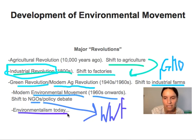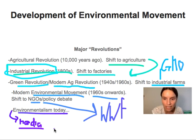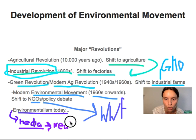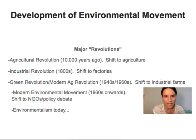Then you can look at environmentalism today. If I had to give this a revolution name, I would really call it the media revolution. Now that we are consuming our media from sources like Netflix and Facebook, the information that we receive is really specialized. If you're interested in environmental issues, there's a wealth of information out there — you can watch specialized television shows, join chat groups, surf websites. It's really becoming a very specialized niche market of environmentalism, and that's where we are today.